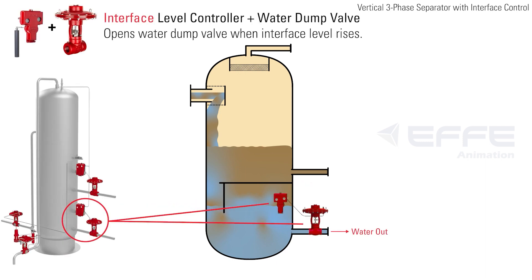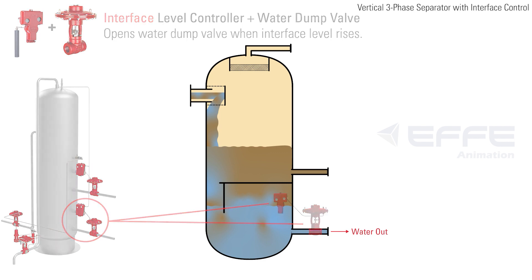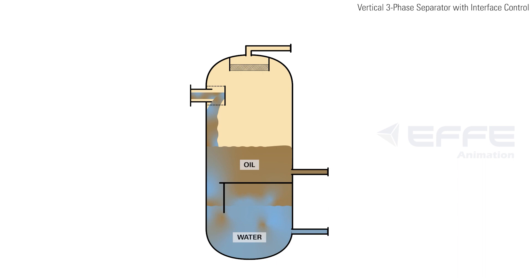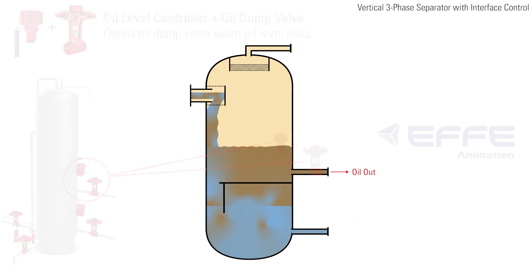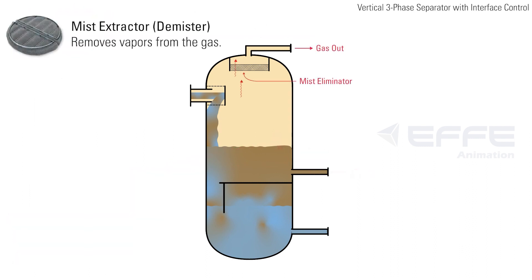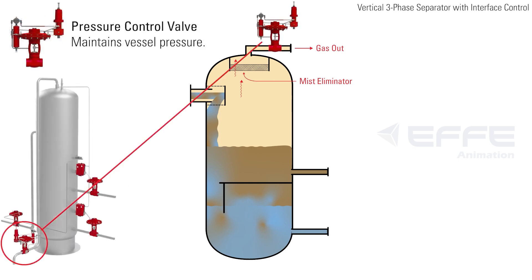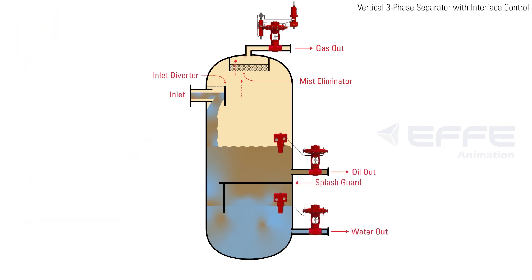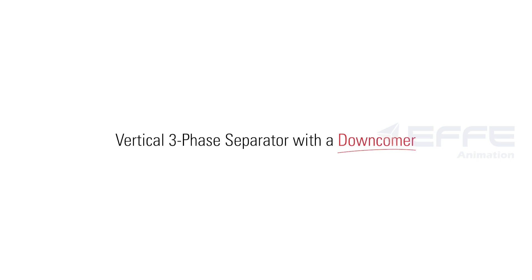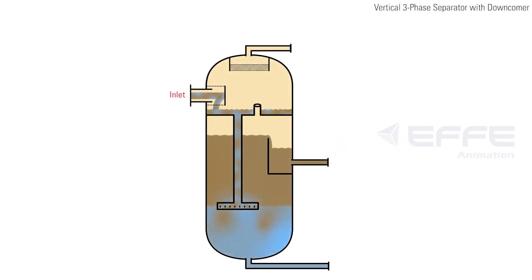As the oil separates, the interface level is determined. The interface level controller will open the water dump valve when the interface level rises. The oil level is also controlled by a liquid level controller, which will open the oil dump valve when the oil level rises. The gas travels to the top of the vessel through a mist extractor and a back pressure control valve, which maintains constant vessel pressure.